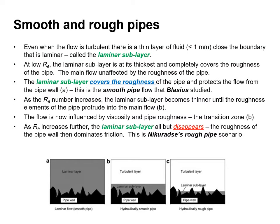Even when the flow is turbulent there is a thin layer of fluid less than one millimetre close to the boundary that is laminar — called the laminar sublayer. At low Reynolds numbers the laminar sublayer is at its thickest and completely covers the roughness of the pipe, so the main flow is unaffected by pipe roughness — this is the smooth pipe flow that Blasius studied, shown in figure A. As Reynolds numbers increase the laminar sublayer becomes thinner until the roughness elements protrude into the main flow (figure B), and the flow is influenced by both viscosity and pipe roughness. As Reynolds number increases further the laminar sublayer all but disappears and the roughness of the pipe wall dominates friction — Nikuradse's rough pipe scenario.